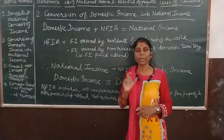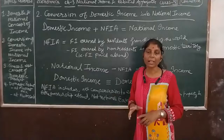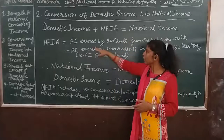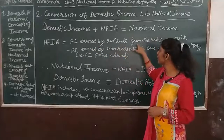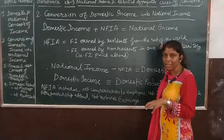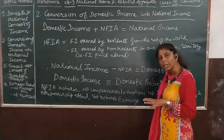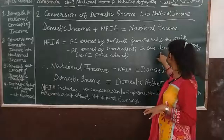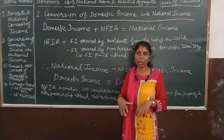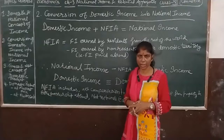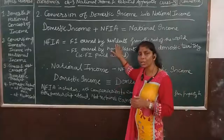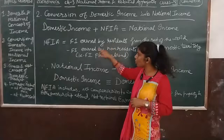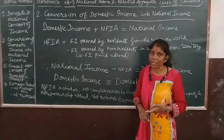Domestic income does not include net factor income from abroad. Net factor income from abroad means: factor income earned by residents from the rest of the world, minus factor income earned by non-residents in our domestic territory. The difference is the net factor income from abroad. It can be positive or negative. It is positive when your factor income earned from abroad is more than what you are paying to non-residents, and negative when your payment to non-residents is more than what you are earning.